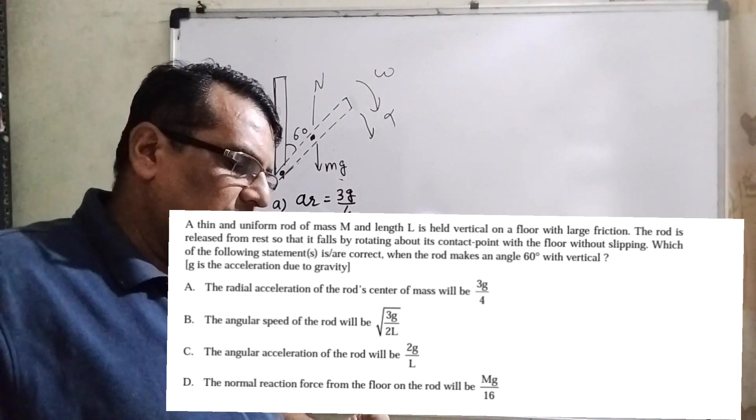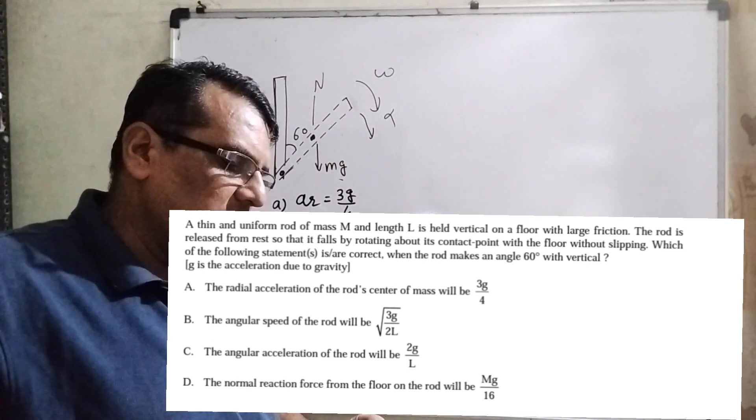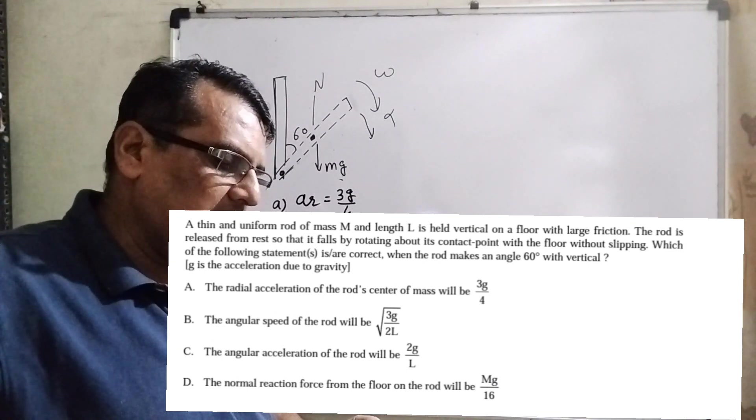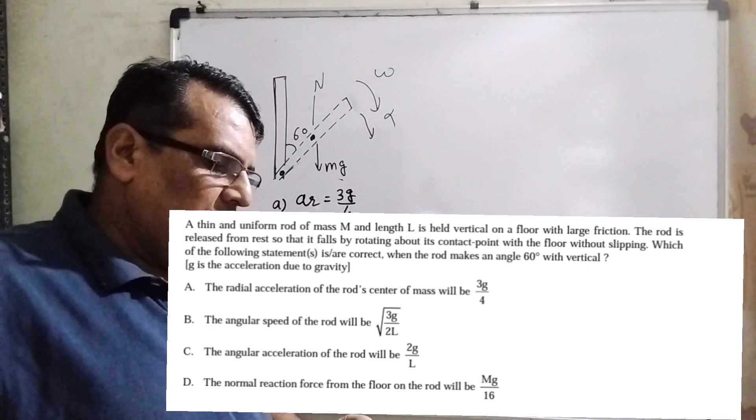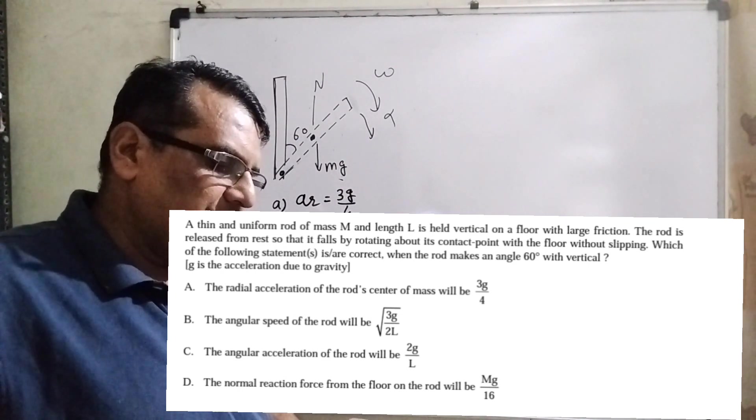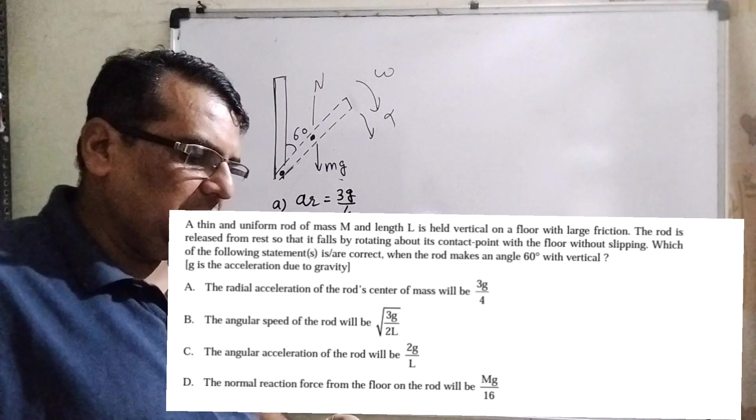What the question says: A thin and uniform rod of mass capital M and length capital L is held vertical on a floor with large friction. The rod is released from rest so that it falls by rotating about its contact point with the floor without slipping.